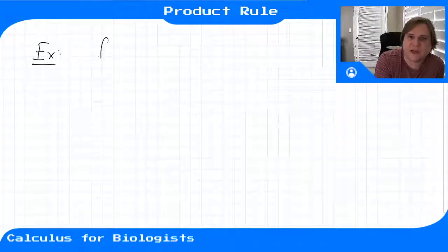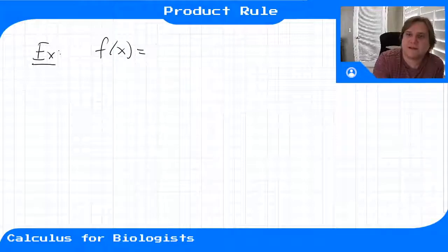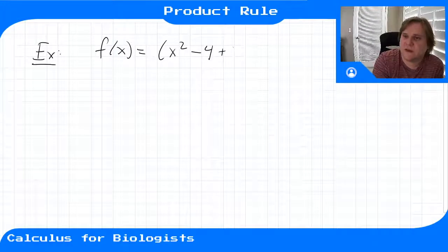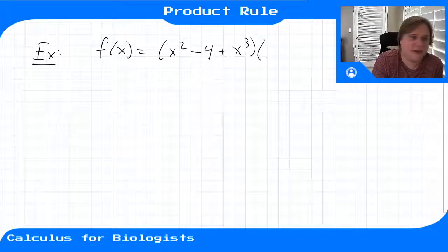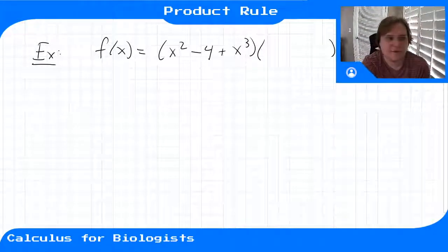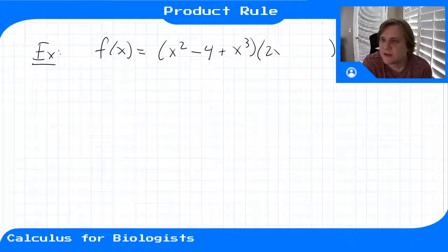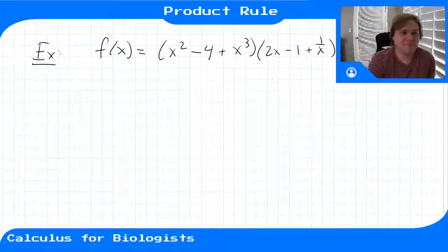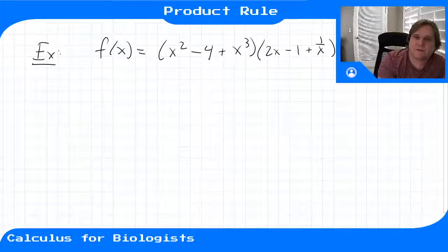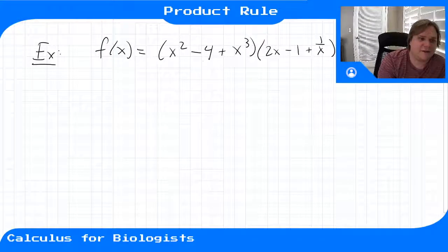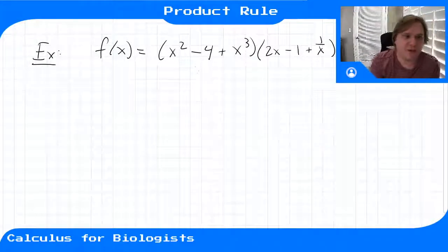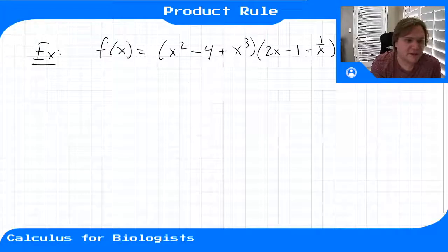So here is an example function. F of x is equal to x squared minus 4 plus x cubed, times 2x minus 1 plus 1 over x. Why not? One way to do this would be to factor this whole thing out and combine all the terms and then do sum rule and power rule and all that. Or we can use the product rule.